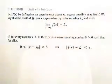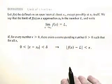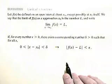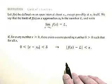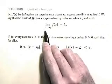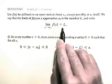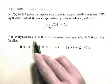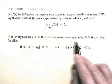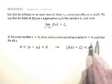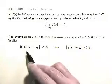Limit of a function. Let f(x) be defined on an open interval about x₀, except possibly at x₀ itself. We say that the limit of f(x) as x approaches x₀ is the number L, and write lim(x→x₀) f(x) = L, if for every number ε > 0 there exists a corresponding number δ > 0, such that for all x with 0 < |x - x₀| < δ implies |f(x) - L| < ε.